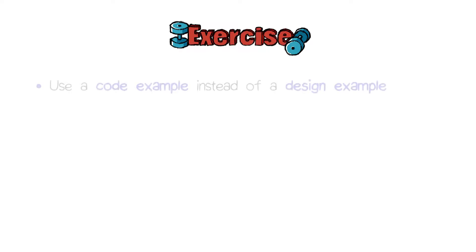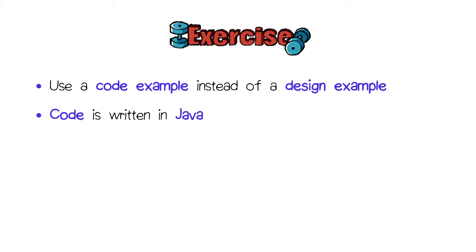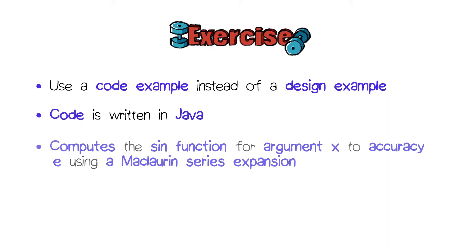Let's begin with an exercise. We will use a code example instead of a design example, but the principles of reviewing are the same. The following code is written in Java. It computes the sine function for argument x to accuracy e, using a Maclaurin series expansion.